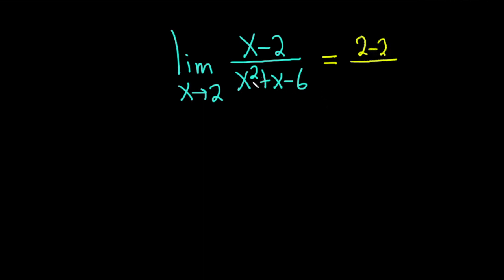And in the denominator we get 2 squared, so that's 4, and plus 2, and then minus 6. So 2 minus 2 is 0, this is 0, over, and then on the bottom we get 6 minus 6, which is also 0.